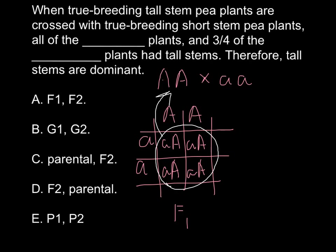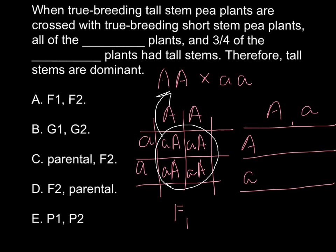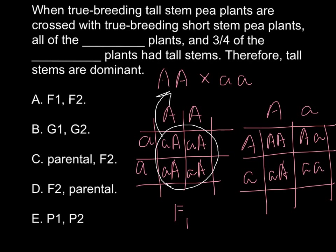These plants are going to be heterozygous. If we self-cross this F1 generation one more time, we have capital A small a crossed with capital A small a. We get capital A capital A, capital A small a, small a capital A, and small a small a. So once again, as you can see, most of these plants are going to look alike.